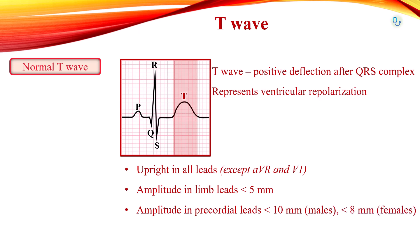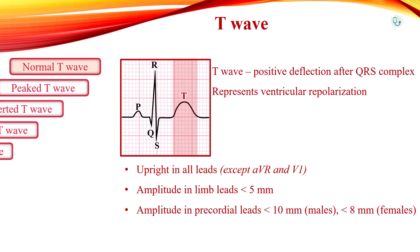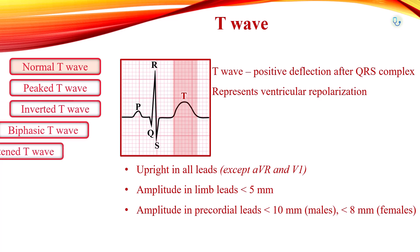Specifically, amplitude is less than 10 mm in males and less than 8 mm in females. T-wave abnormalities include peaked T-waves, inverted T-waves, biphasic T-waves, and flattened T-waves.